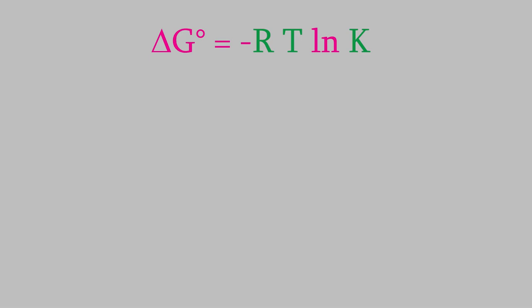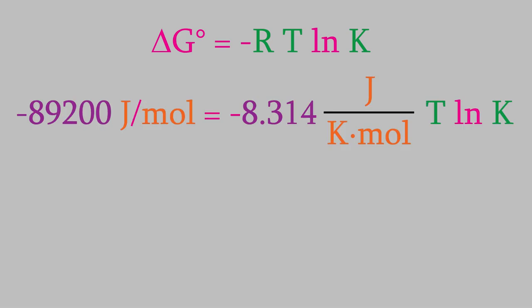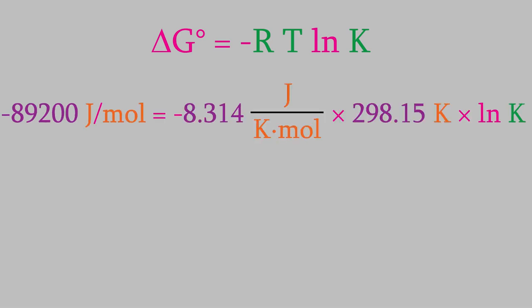For delta G, we plug in the value that we calculated a minute ago. R is 8.314 joules per kelvins times moles. For the temperature, let's imagine that we're performing this reaction at room temperature, which is 25.0 Celsius. That's 298.15 Kelvin.